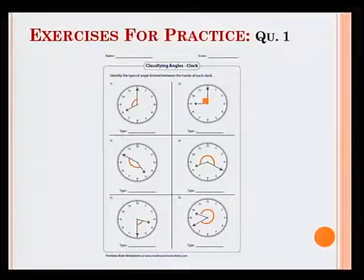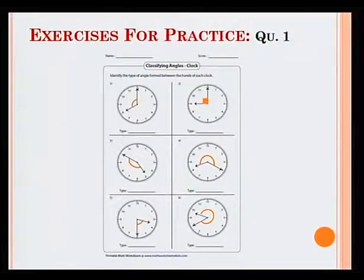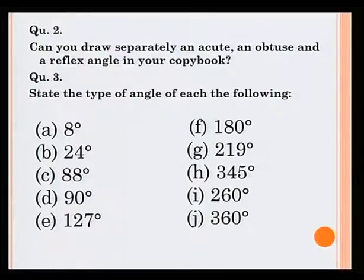Now, some exercises for you to practice. Question 1: Identify the type of angle formed between the ends of each clock. You need to use the terms you have learned earlier in the lesson. Question 2: Can you draw separately an acute, an obtuse and a reflex angle in your copybook? Question 3: State the type of angle of each of the following.